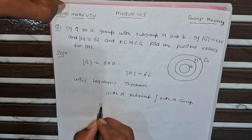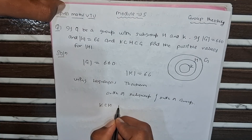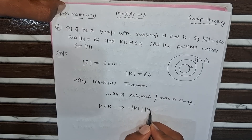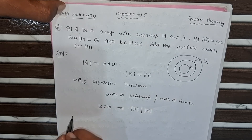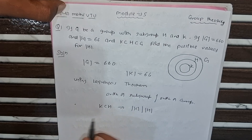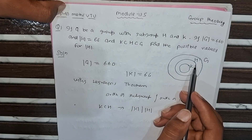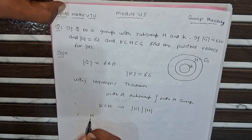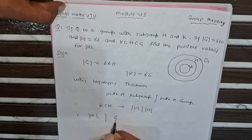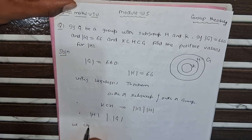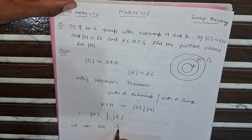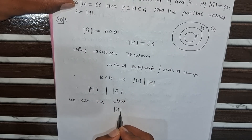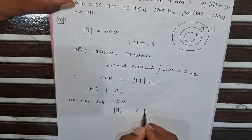K is a subgroup of H, which means the order of K divides the order of H. Similarly, order of H divides the order of G. So we can say that the order of K equals a times the order of H — this gives us our first relationship.